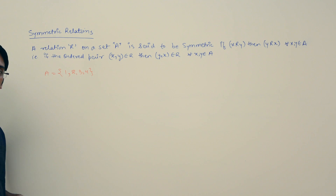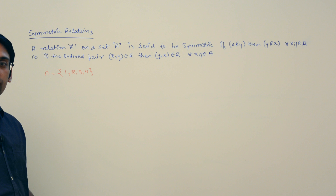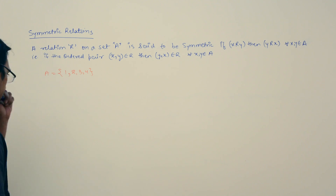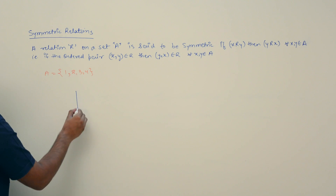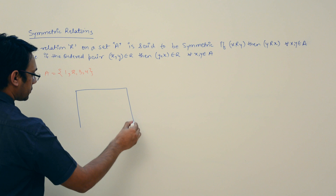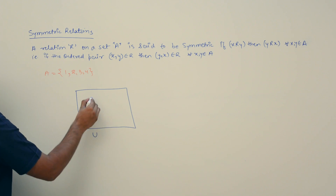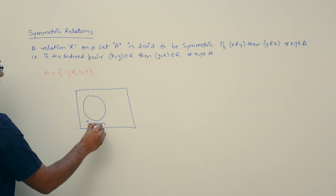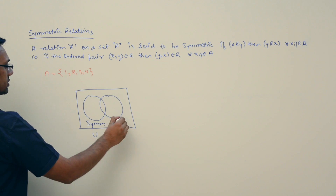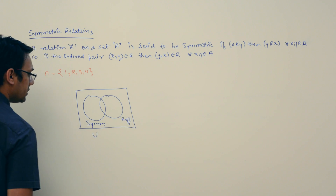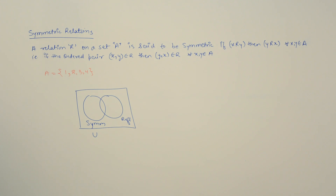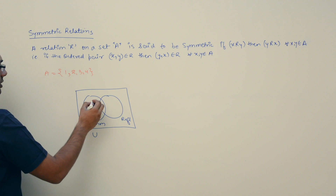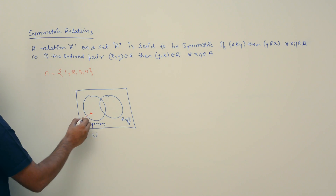Now let us look at the relationship between symmetric and reflexive relations using a Venn diagram. This is the universal set. This is the set of relations which are symmetric, and this is the set of relations which are reflexive.